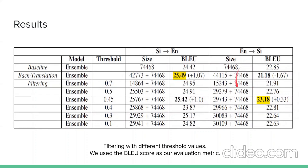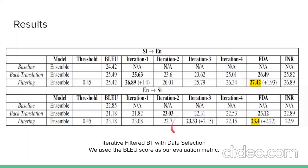For English-to-Sinhala translation, vanilla back-translation failed to outperform the baseline due to the monolingual English-Sinhala corpus containing very long sentences that did not translate correctly. Best results for filtered back-translation were obtained at a threshold of 0.45, outperforming both the baseline and vanilla back-translation. With iterative filtered back-translation at iteration three, the highest score was observed — a 2.15 BLEU gain over vanilla back-translation. Combining the FDA algorithm with iterative filtered back-translation gave a plus-2.22 BLEU gain over vanilla and a plus-0.33 gain over the baseline.